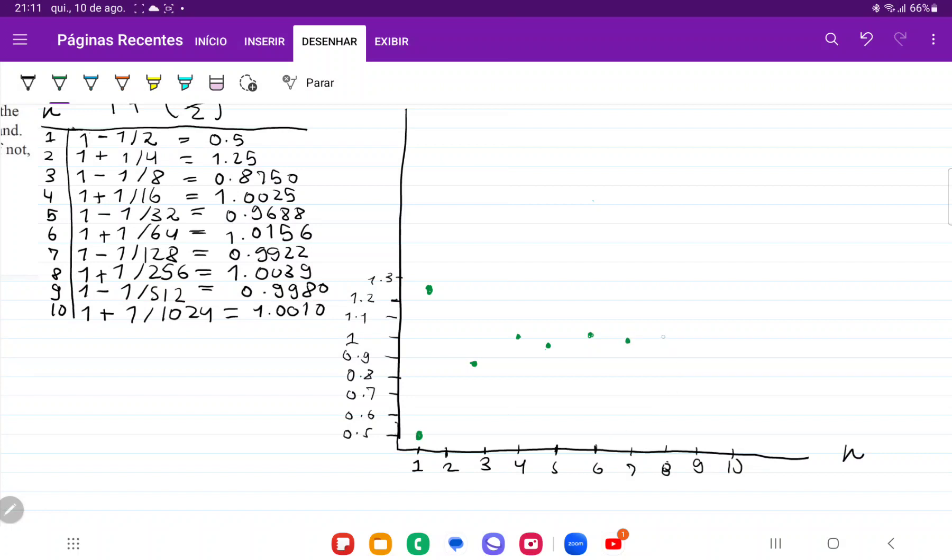8, we have 1.0039. So here. 9, we have 0.998. So below. And then 10, we have 1.0010. So like so.